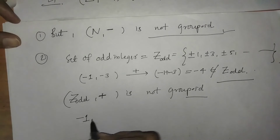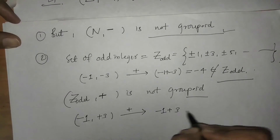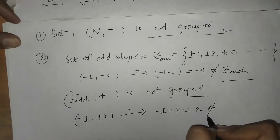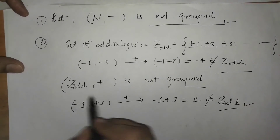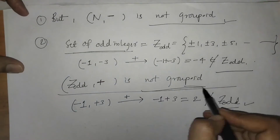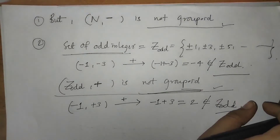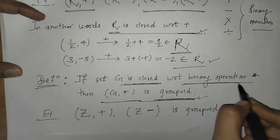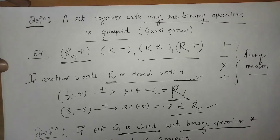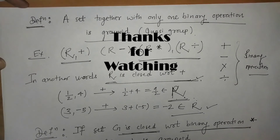Again, if we take minus 1 and plus 3 under addition, we get minus 1 plus 3 equals 2, and 2 does not belong to the set of odd integers. So the set of odd integers with addition is not a groupoid. In this way, we have defined groupoid: set G is called a groupoid when the set G is closed with respect to a binary operation. That's it for now — see you in the next video, thank you, keep watching.